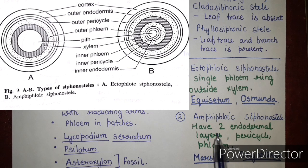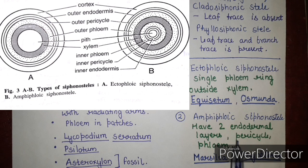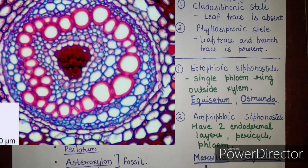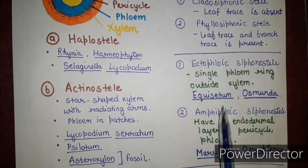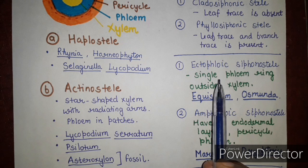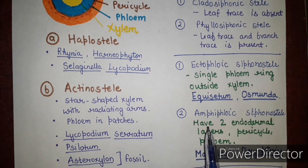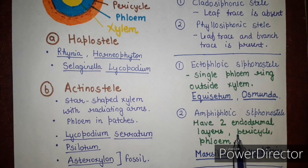In amphiphloic siphonostele, there are two layers of endodermis (outer and inner), two layers of pericycle (outer and inner), and two layers of phloem (outer and inner). Only a single xylem layer is present. The key difference from ectophloic siphonostele is that phloem, pericycle, and endodermis are present on both sides of the single xylem layer. Examples are Marsilea and Dryopteris.